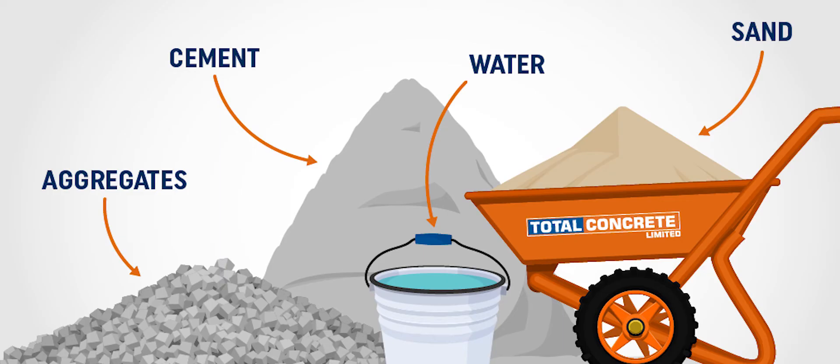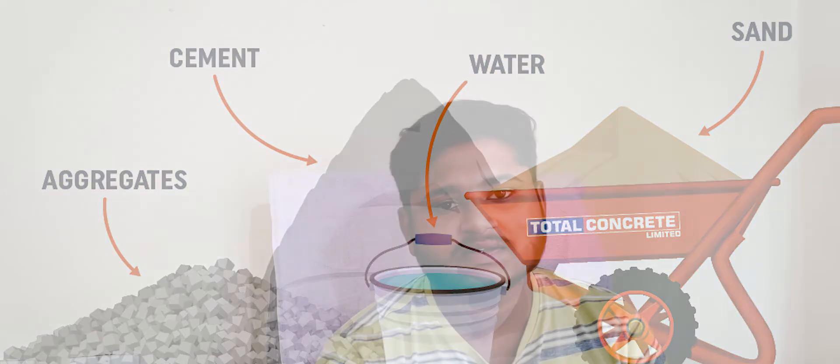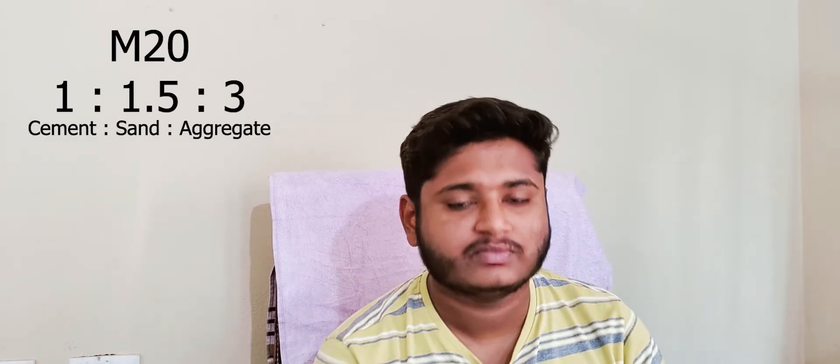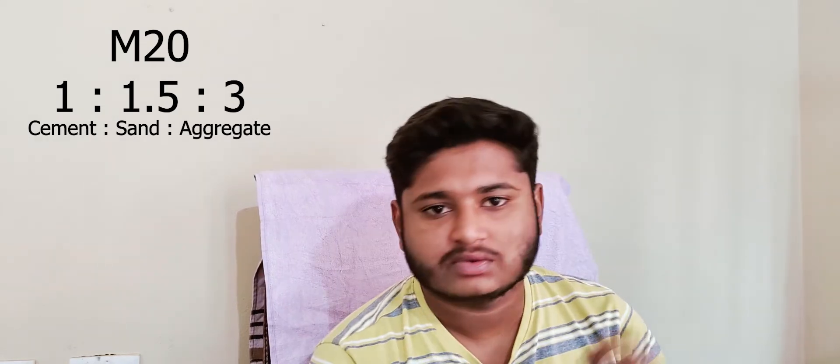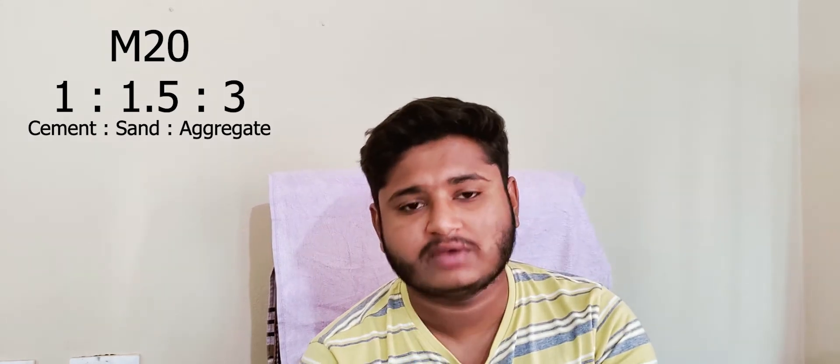For explanation purposes, let's calculate the quantity of materials for 1 cubic meter of concrete. Let us assume the mix proportion of concrete is M20, that is 1:1.5:3, where 1 is cement, 1.5 is sand, and 3 is aggregate.